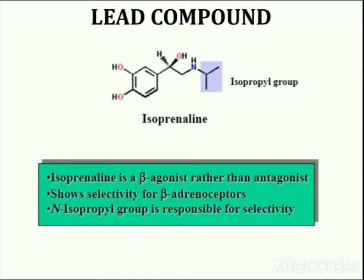Isoproterenol's isopropyl group is responsible for its selectivity towards beta-adrenoceptors. Now because isoproterenol shows activity at beta-adrenoceptors, by only a few modifications in the structure of isoproterenol, generation of a partial agonist or antagonist is possible. That is why it is used as a lead compound for the generation of beta blockers.